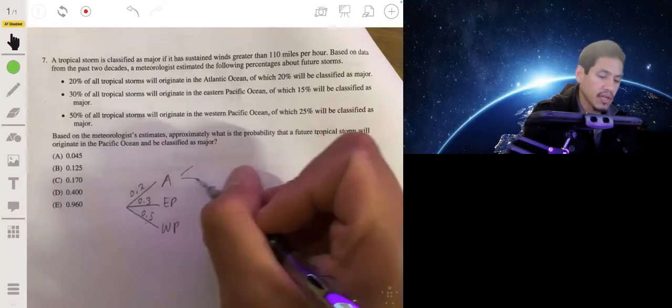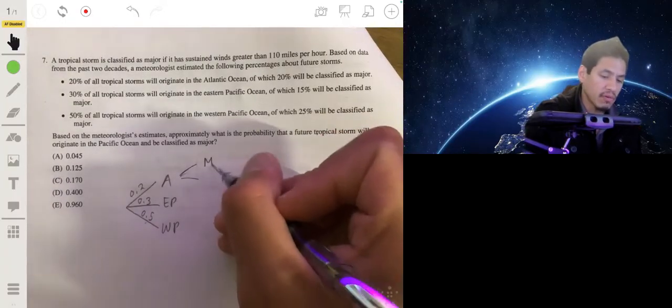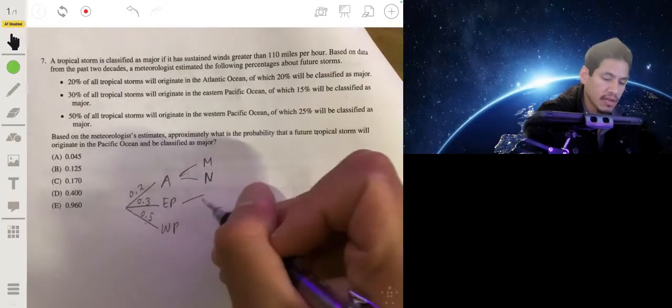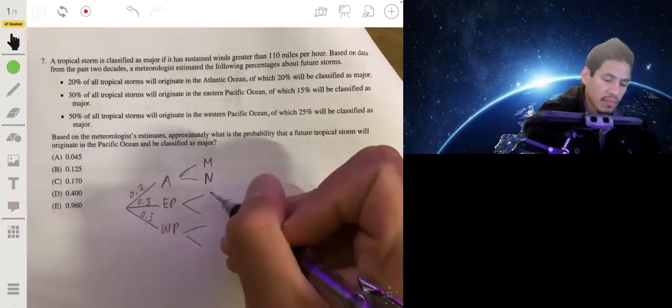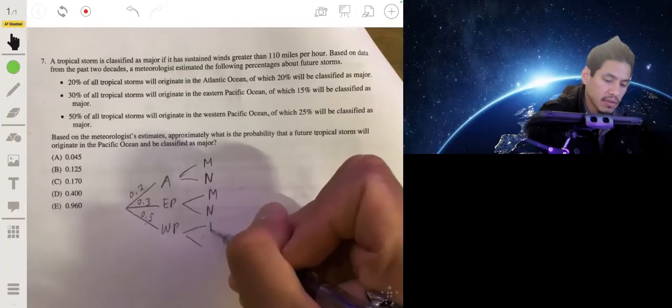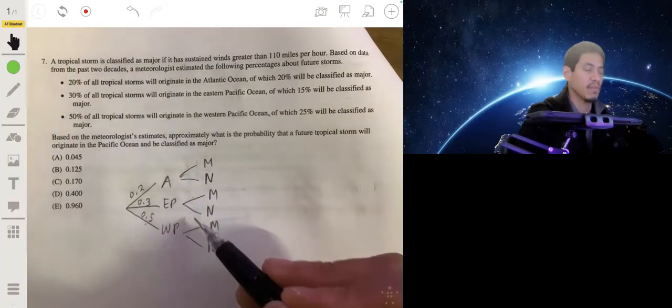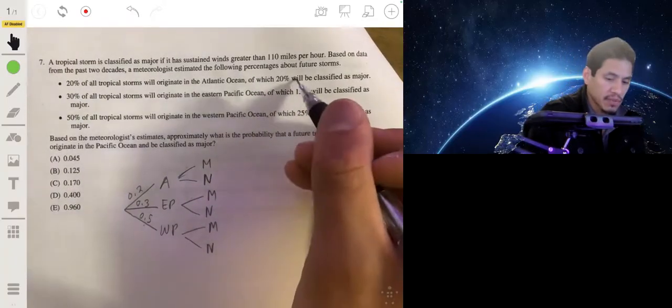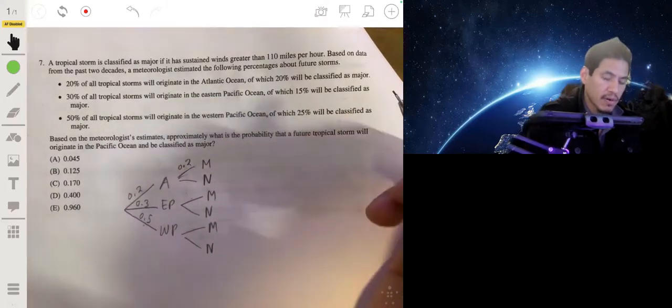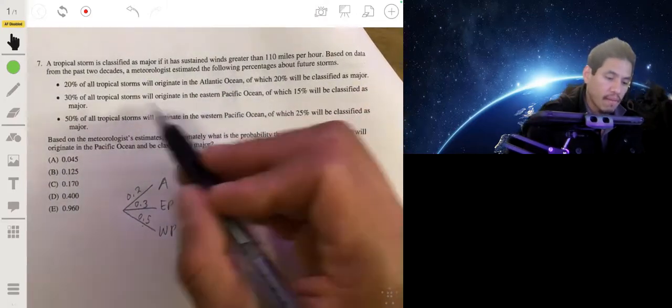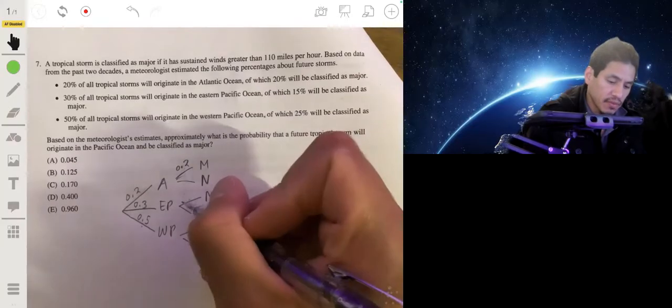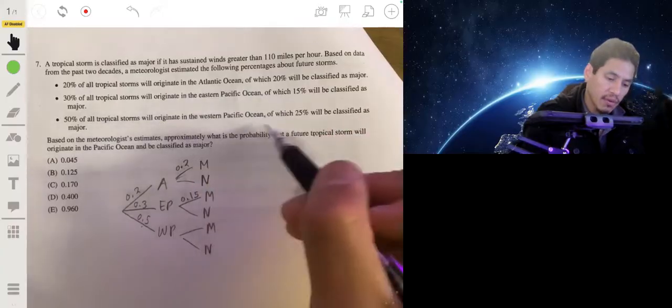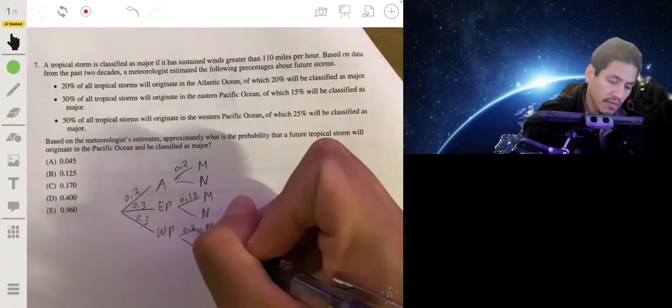And now within each ocean the storm could be major, we'll write that as an M, or non-major, or we'll just say not major, or N. So each of those breaks off into two branches. And we write down the corresponding probabilities that we're given here. So for the Atlantic, 20% of them are major, so we put 0.2 there. In the eastern Pacific, 15% are major. In the western Pacific, 25% are major, so we put 0.25 there.